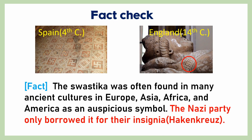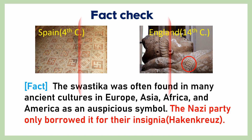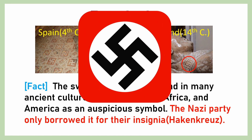The swastika was often found in many ancient cultures in Europe, Asia, Africa, and America — almost worldwide — as an auspicious symbol. The Nazi party only borrowed it for their insignia and named it Hakenkreuz for their own.